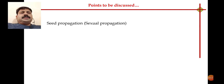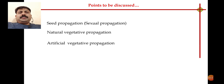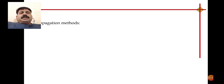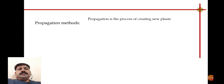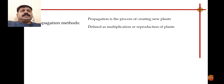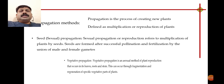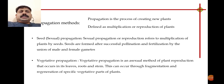In today's lecture, we are going to discuss the types of propagation: seed or sexual propagation, and the second important type, vegetative propagation. Vegetative propagation is of two types — natural vegetative propagation and artificial vegetative propagation. Propagation is defined as the process of creating a new plant; it is also defined as multiplication and reproduction of plants.